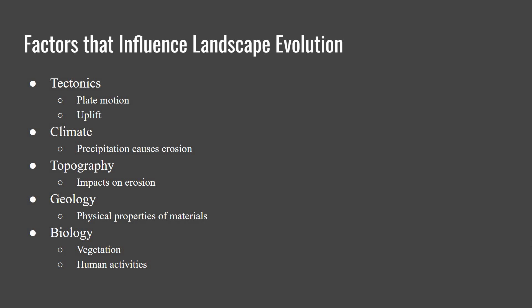How are landscapes created? There are five main factors that influence landscapes, both in terms of landforms and vegetation and the human element. First is tectonics.